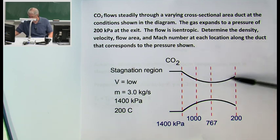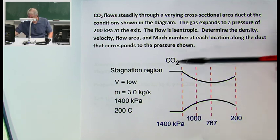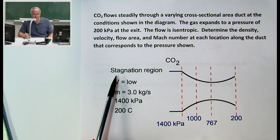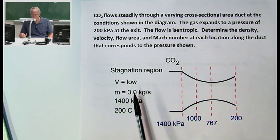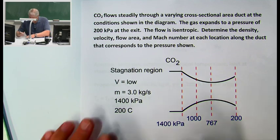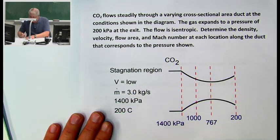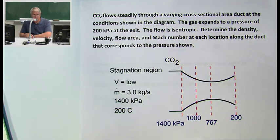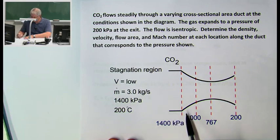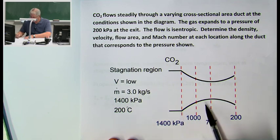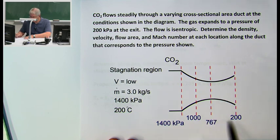We have this converging-diverging duct with CO2. Way upstream we have what's called the stagnation region, where the velocity is essentially zero. The mass flow rate is three kilograms per second, the pressure is 1400 kPa, and the temperature is 200 degrees C. At the entrance the flow is essentially at stagnation: 1400 kPa. At different sections along the duct we've measured the pressure — 1000 kPa, 767 kPa, and 200 kPa.